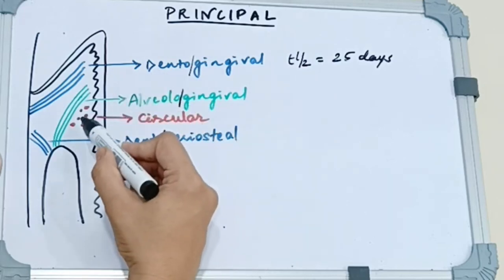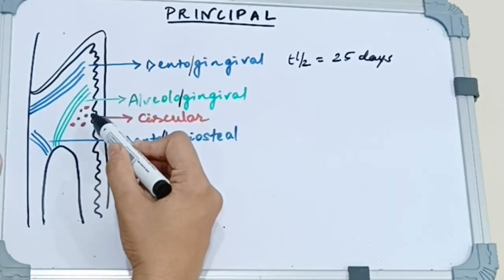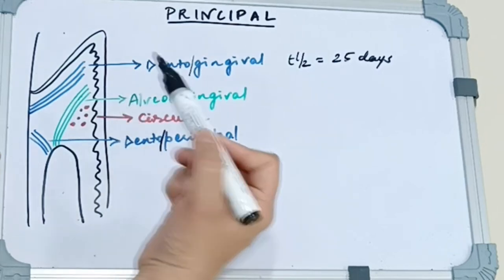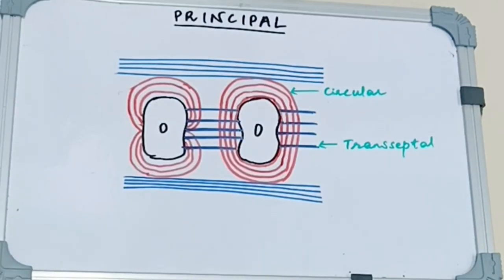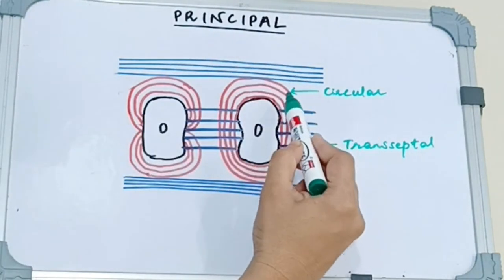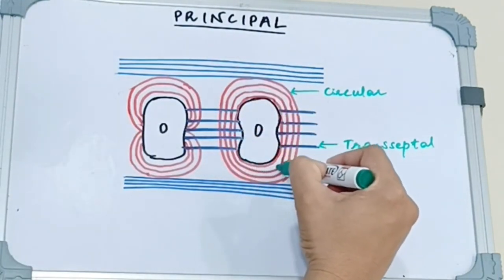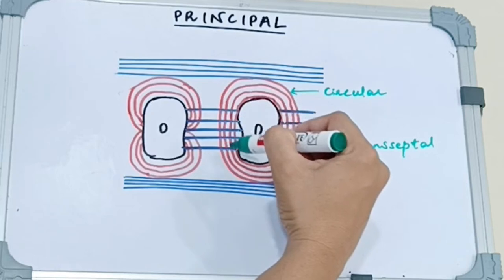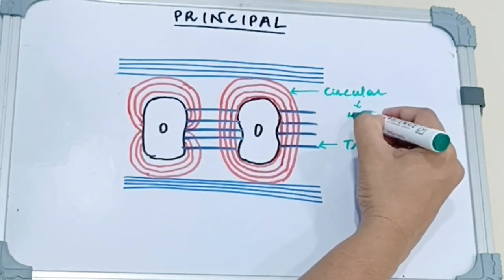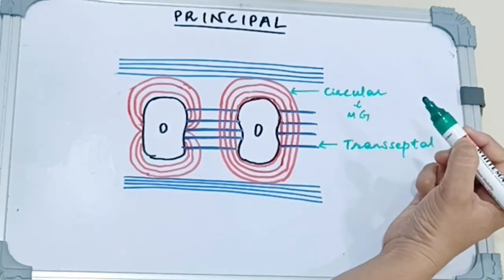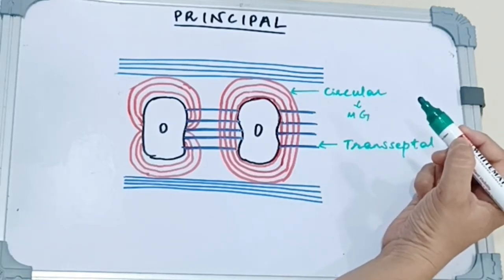Then we have the circular fibers which are present around the tooth. These encircle the tooth in a cuff or a ring fashion. These are present in the marginal gingiva and they maintain the contour of the marginal gingiva.